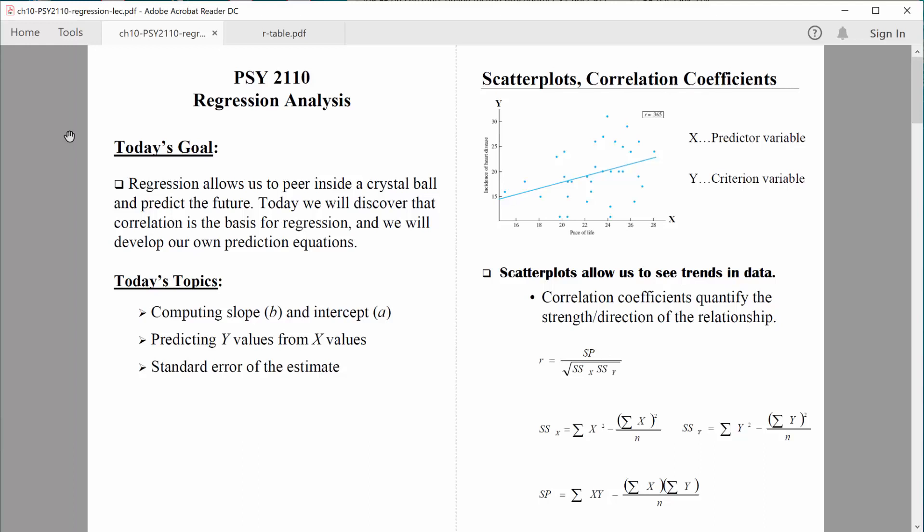We'll revisit correlation just a little bit because correlation and regression go hand-in-hand. We'll talk about the slope of the line, the y-intercept for the line, the standard error of the estimate for the line. So we've got some new topics that we'll need to cover.